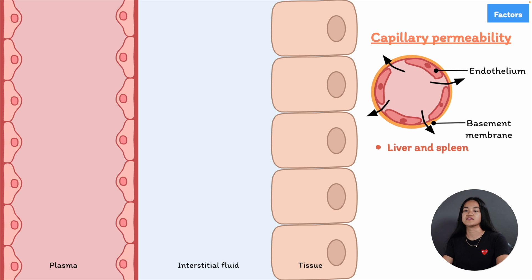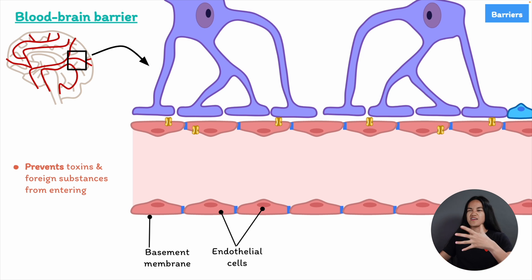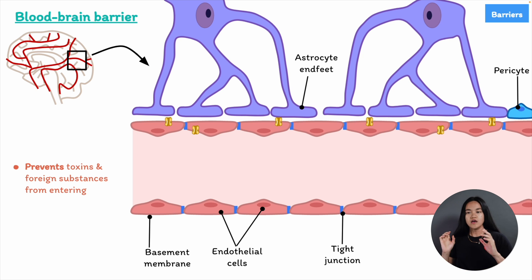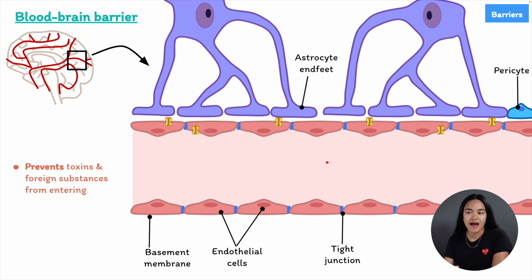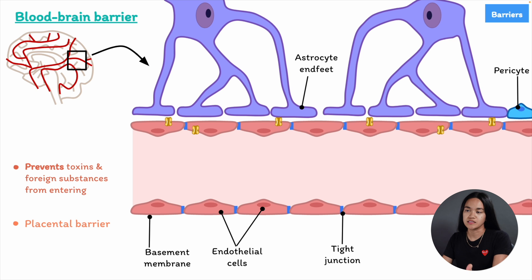Continuous capillaries with tight junctions between endothelial cells limit the passage of large molecules and are found in the brain. This brings us to specific barriers drugs must cross to be distributed. The blood-brain barrier separates the bloodstream from the brain. Endothelial cells act as a barrier between the brain and capillaries, protecting it from substances that enter the bloodstream. It consists of endothelial cells joined by tight junctions, forming a continuous wall, along with astrocytic end-feet and pericytes. Only lipophilic substances or actively transported drugs can pass into the central nervous system.